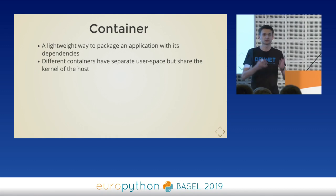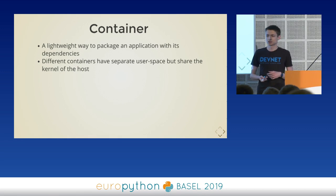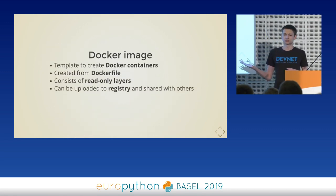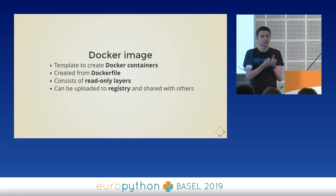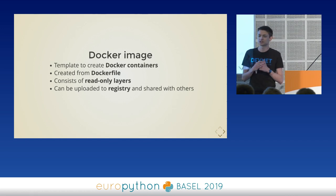To make sure that everyone is on the same page, let's start with some Docker terminology. First, container: it's a lightweight way to package your application with dependencies. Different containers have some isolation — they have separate user space, but they share the kernel of the host. Next, Docker image: it's a template to create Docker containers. It's built using the Dockerfile, and it consists of read-only layers. We are going to talk about layers later.